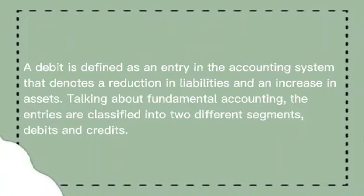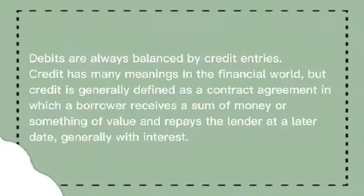Talking about fundamental accounting, the entries are classified into two different segments: debits and credits. Debits are always balanced by credit entries. Credit has many meanings in the financial world, but credit is generally defined as a contract agreement in which a borrower receives a sum of money or something of value and repays the lender at a later date.